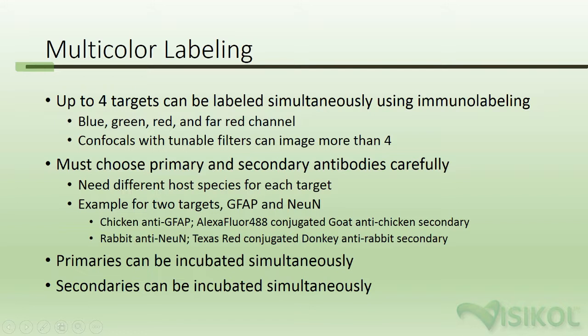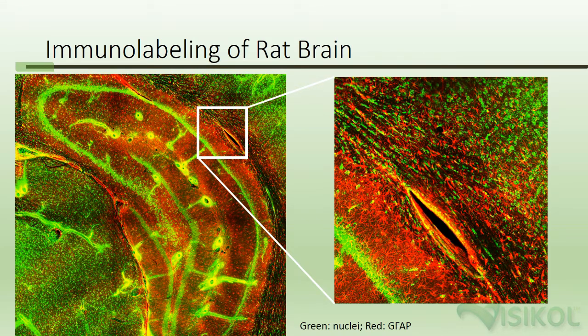Multicolor labeling. Up to four targets can be labeled simultaneously using immunolabeling, taking advantage of the blue, green, red, and far red channels. Confocal microscopes with tunable filters can often image more than four colors simultaneously. You must choose primary and secondary antibodies carefully for multicolor labeling. Antibodies require a different host species for each target. Primaries can be incubated simultaneously, and the secondary antibodies can also be incubated simultaneously.